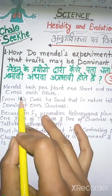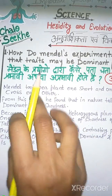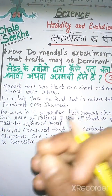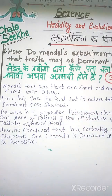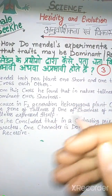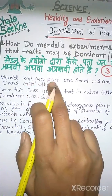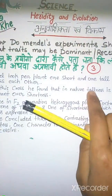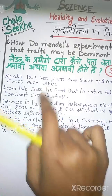Mendel took a pea plant for his experiments. Why did he take a pea plant? Because its life cycle is short. When the life cycle is short, the next generation comes quickly, so we can experiment easily. Mendel took a small (dwarf) pea plant and a tall pea plant and crossed both.